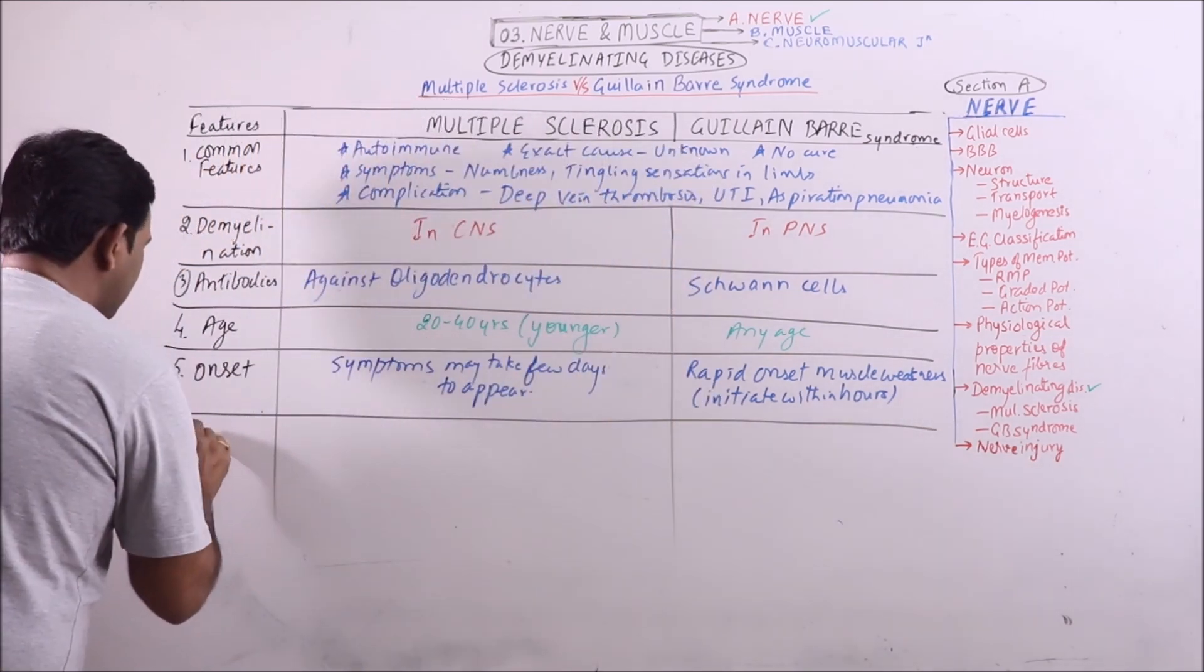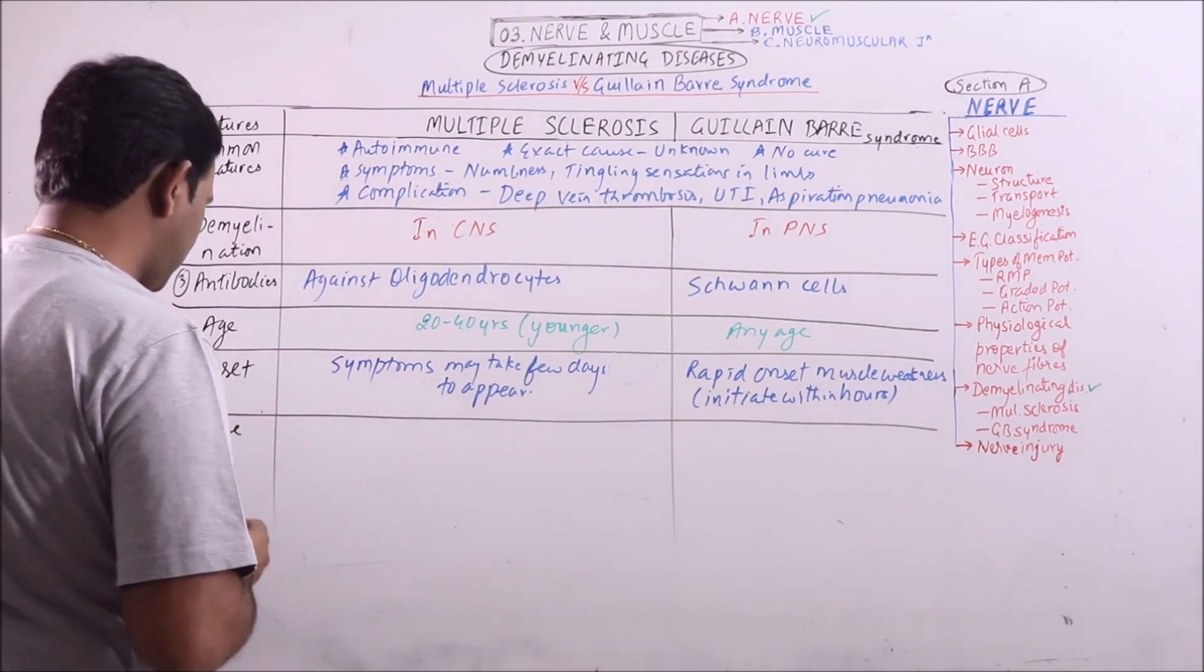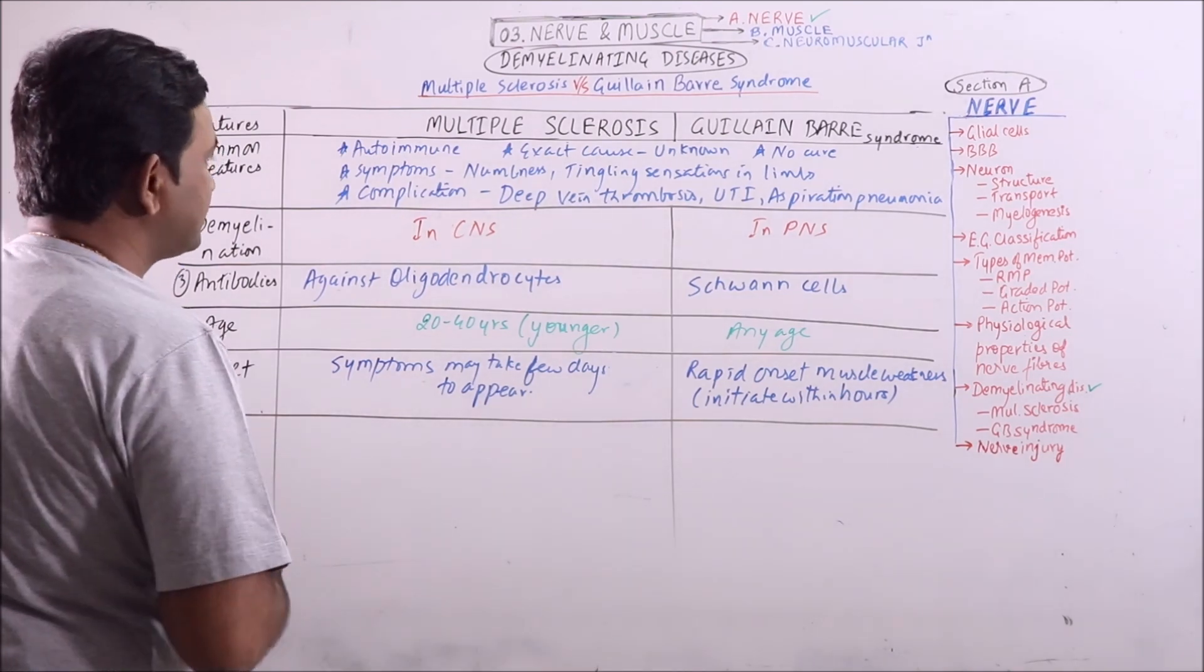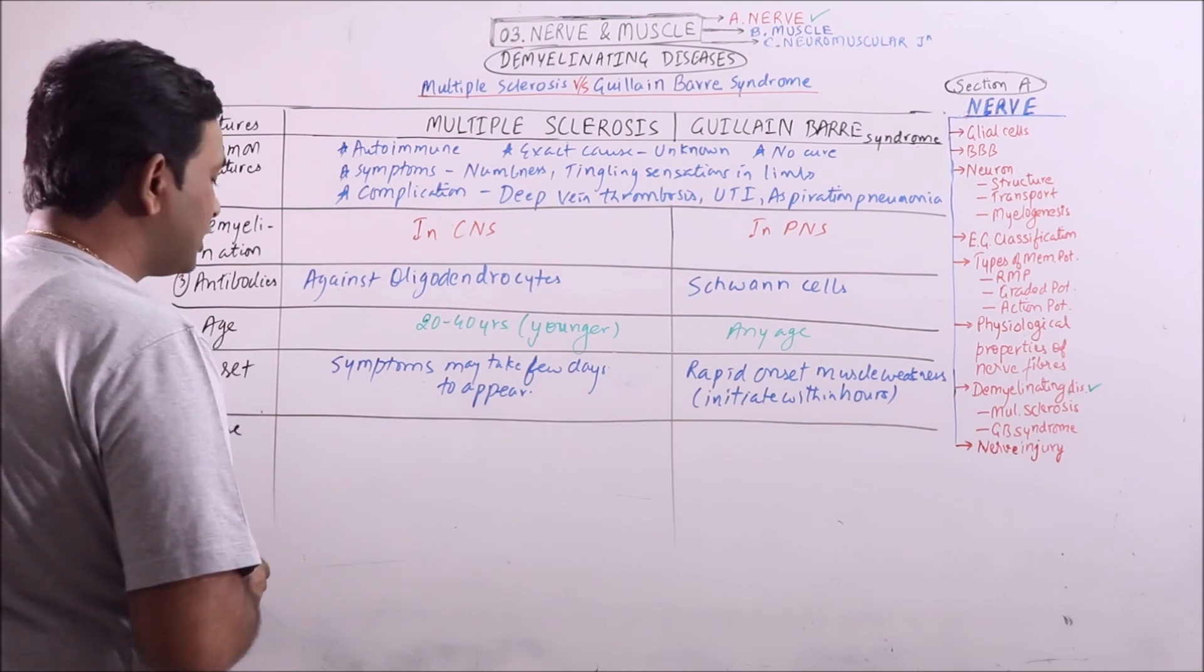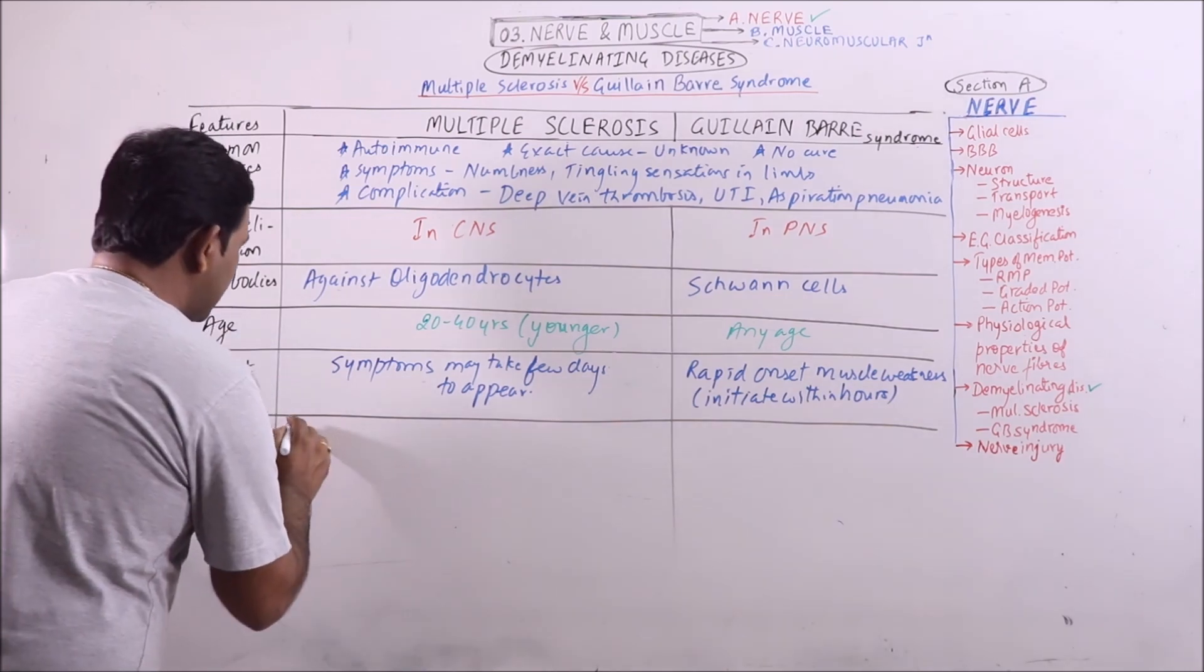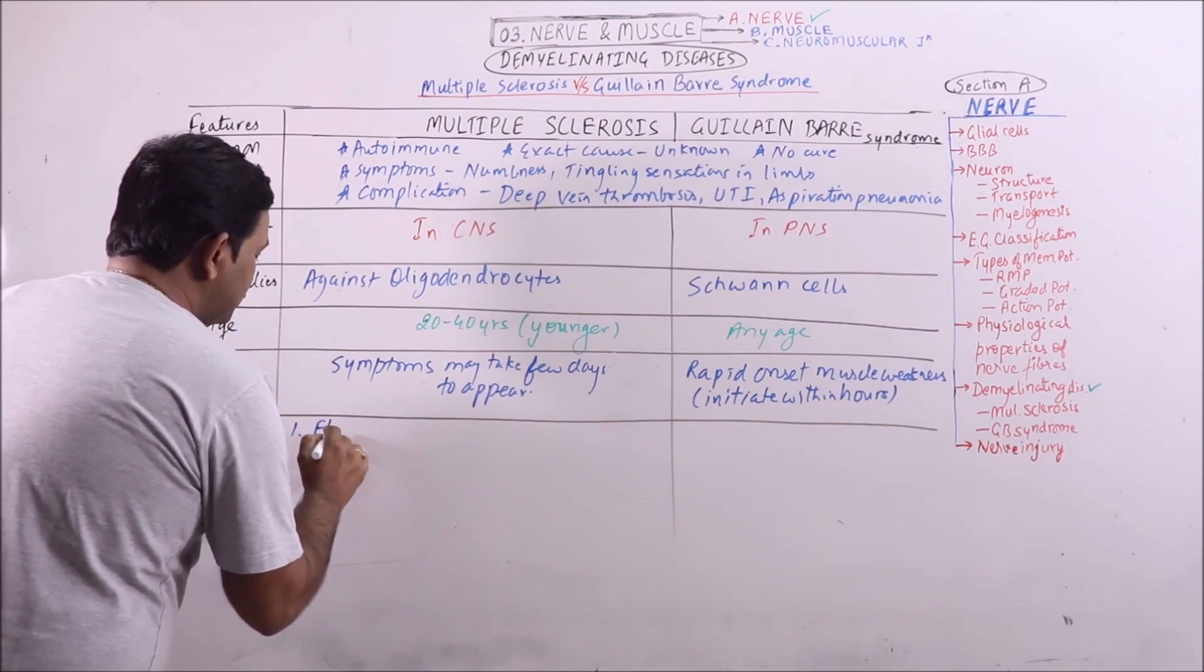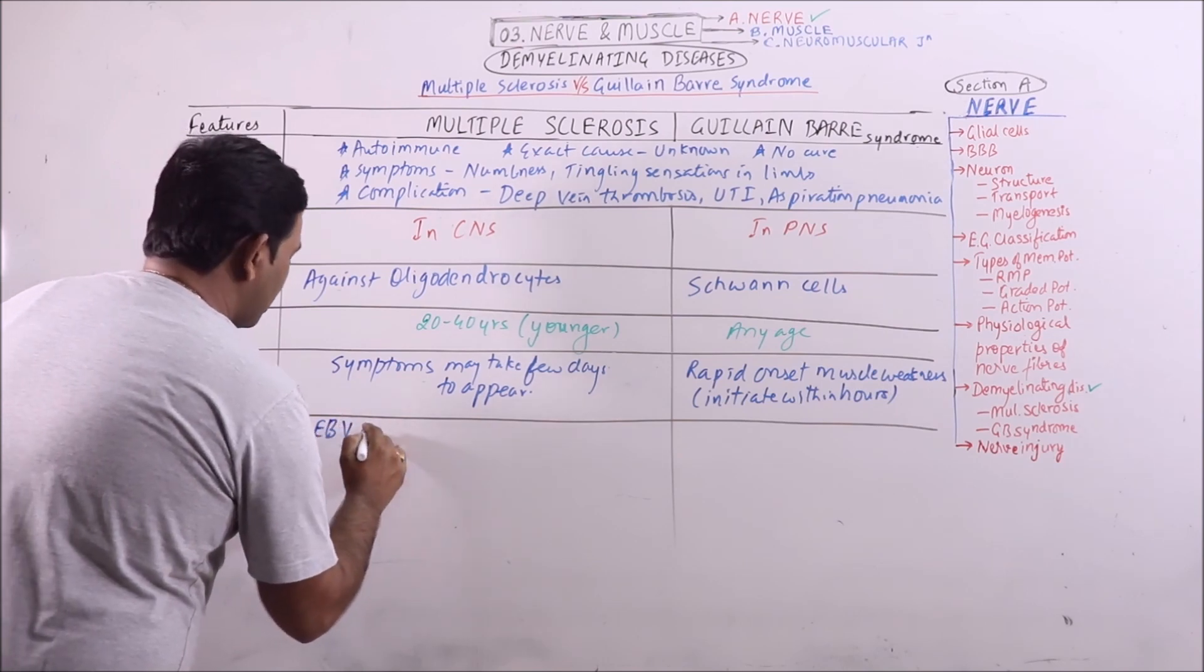If we discuss the cause, we know that there is no definite or exact cause known for these demyelinating diseases. But still these are having close association with conditions like Epstein-Barr virus, Chlamydia pneumonia, or herpes virus.